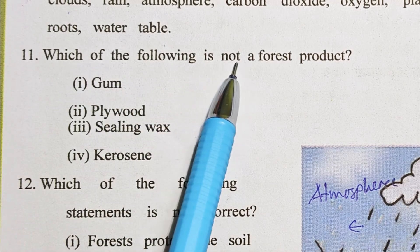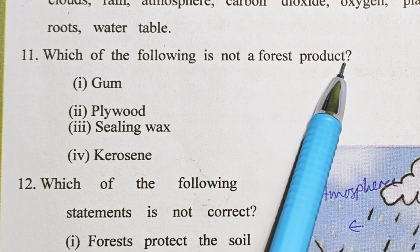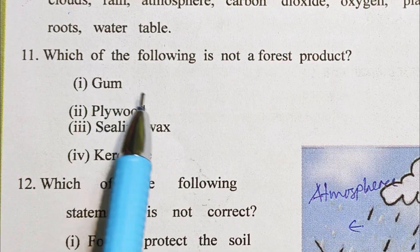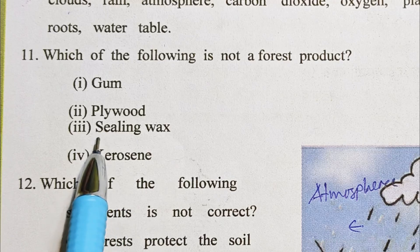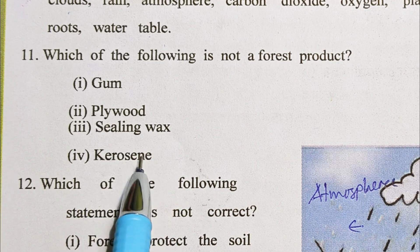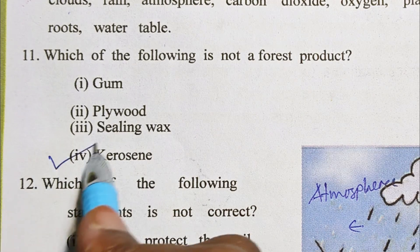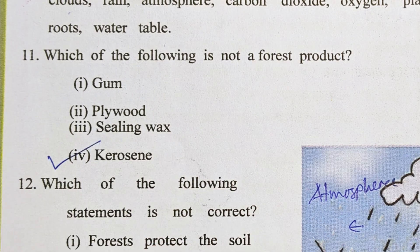Question number 11: Which of the following is not a forest product? Gum, plywood, ceiling wax, kerosene. The answer is kerosene.